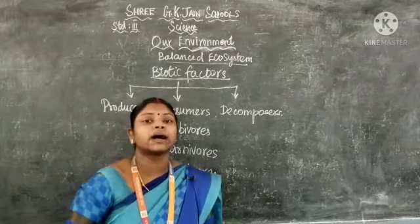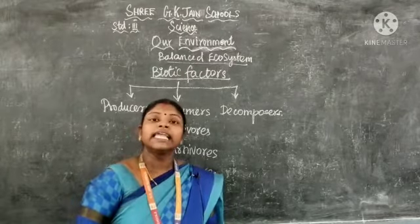Next we come to decomposers. Decomposers feed on dead plants and animals — that is what they are called. They do not make their own food; they depend only on dead plants or dead animals. Examples of decomposers are bacteria and fungi.